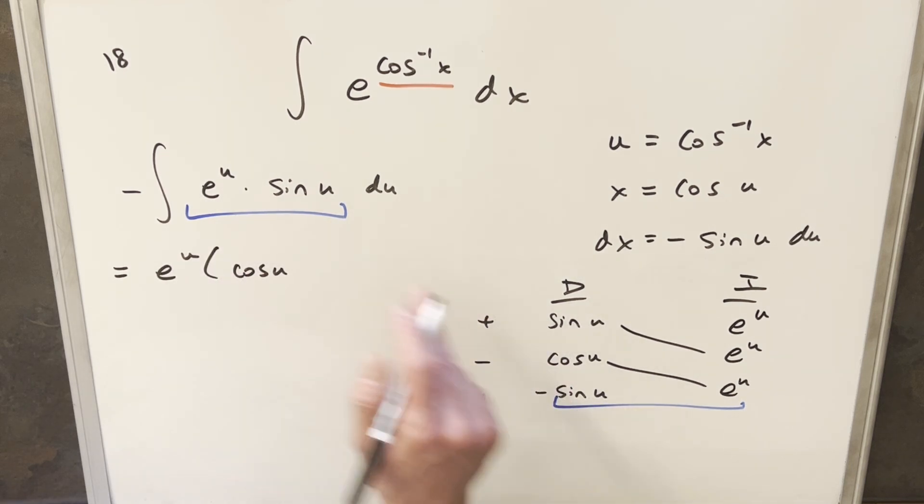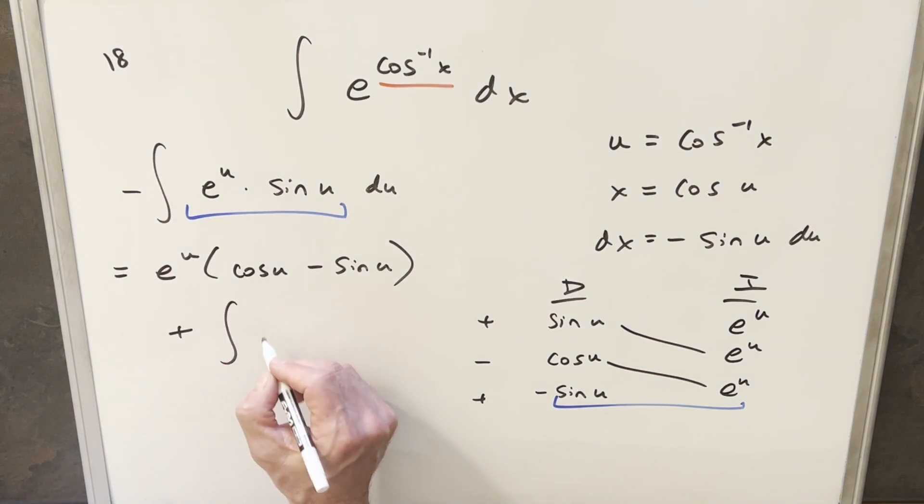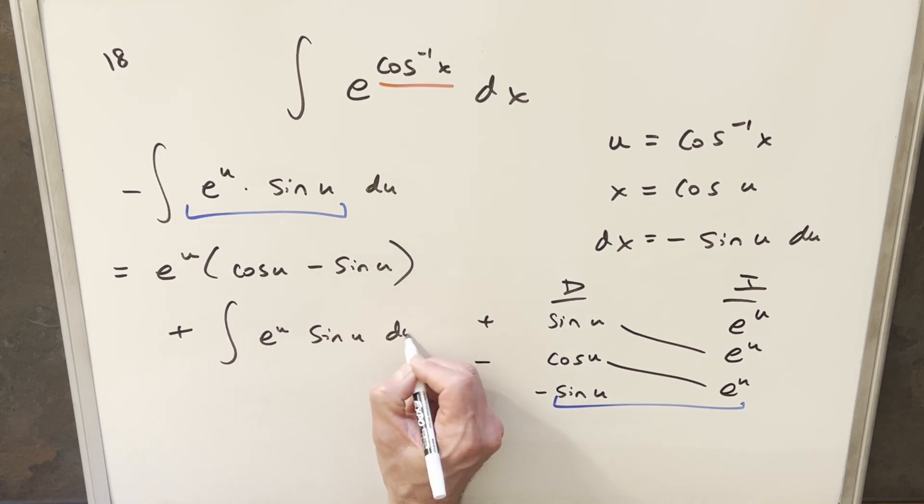Then distributing the minus into this sine, we'll have minus sin(u). And then this last row is going to be an integral. We distribute the minus sine in here. And so this is going to give me just plus e^u sin(u) du.